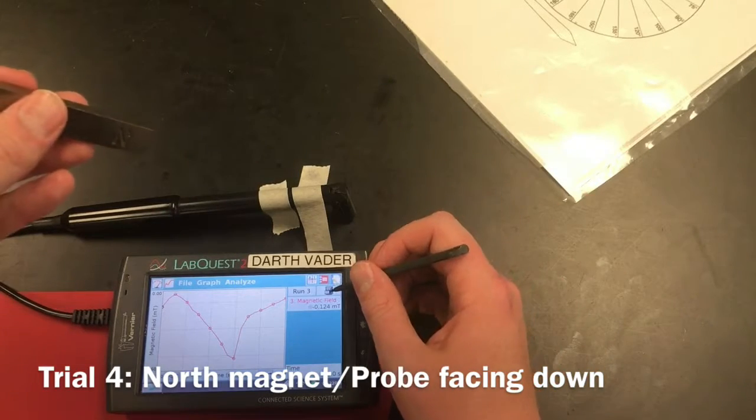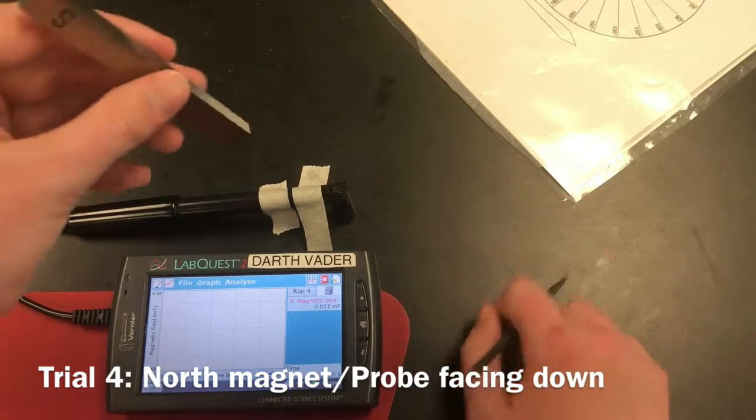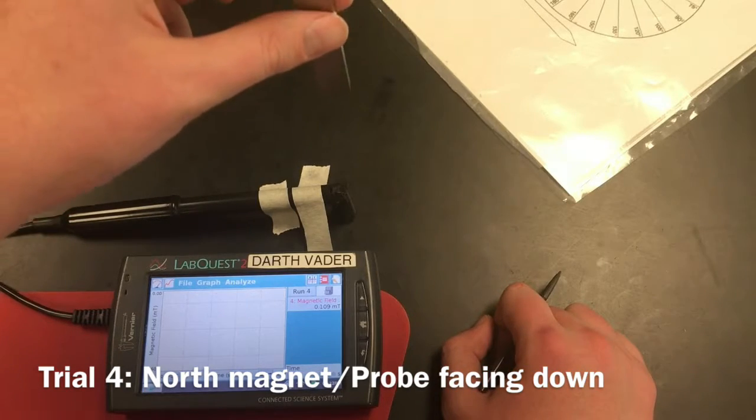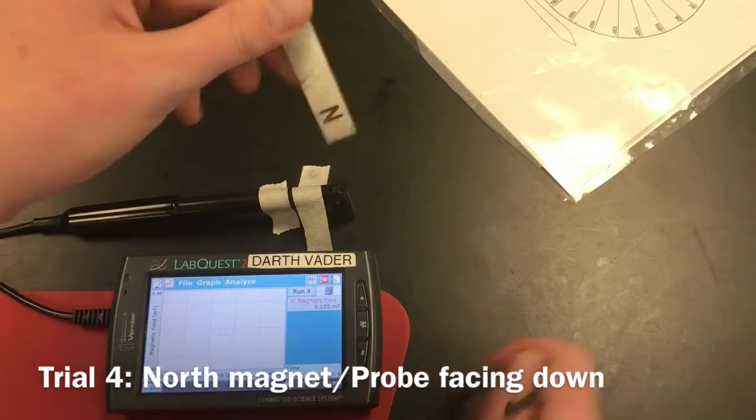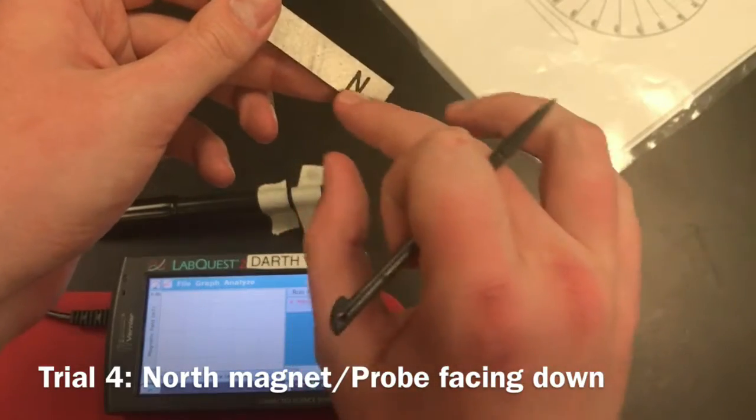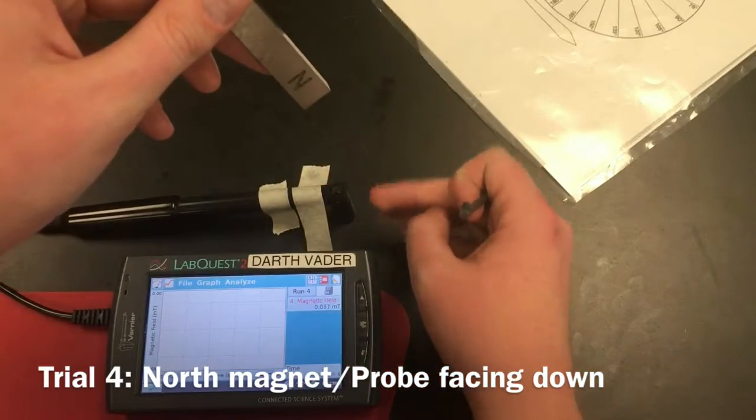And then for our final run, run four, one more time hitting the filing cabinet. We're going to use our north end again, north end facing down, probe facing down.